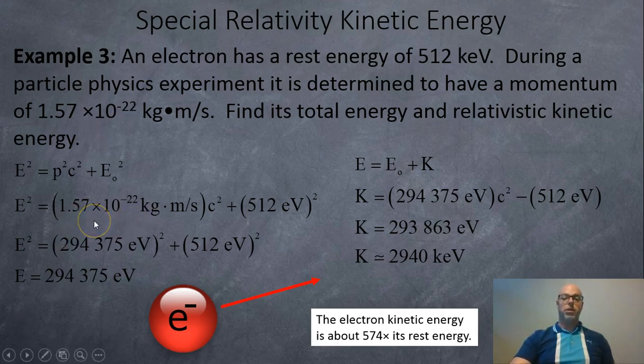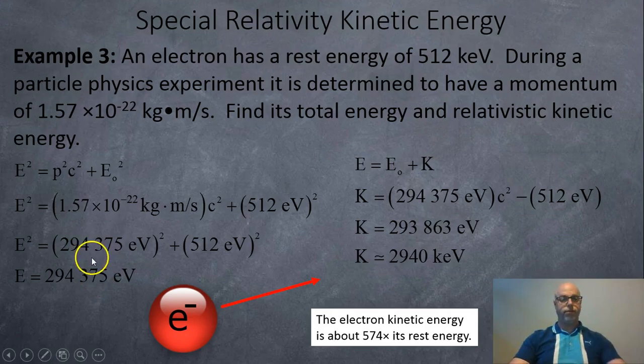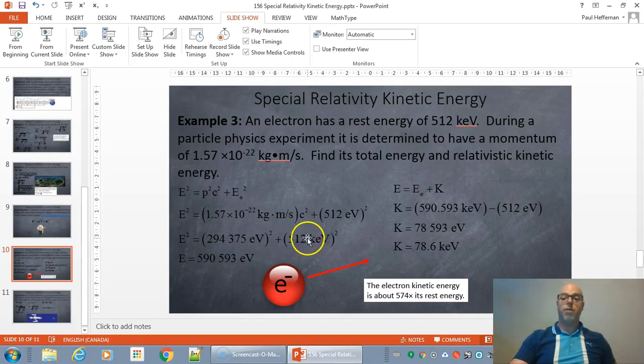So here we go. We just plug in the momentum. C is 3 × 10⁸, so I just left it as c. We have the 512 kiloelectron volts, so a little typo in the K there. And we get this much energy for its relativistic energy right here. I fixed the typo. So we end up getting 590,593 electron volts or 590.593 kiloelectron volts, which we're plugging in over here.